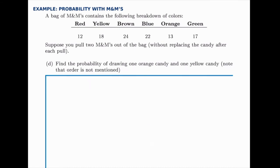For the last part we're going to find the probability of drawing an orange and a yellow. This looks a lot like part B where we drew blue then brown, but in part B we were given a specific order. In this case, notice carefully that order is not mentioned — it's just the probability that one of them is orange and one of them is yellow, which is easy to miss. We need to account for the fact that we could draw orange then yellow, or yellow then orange, and the word 'or' tells us we're going to add the two probabilities together.